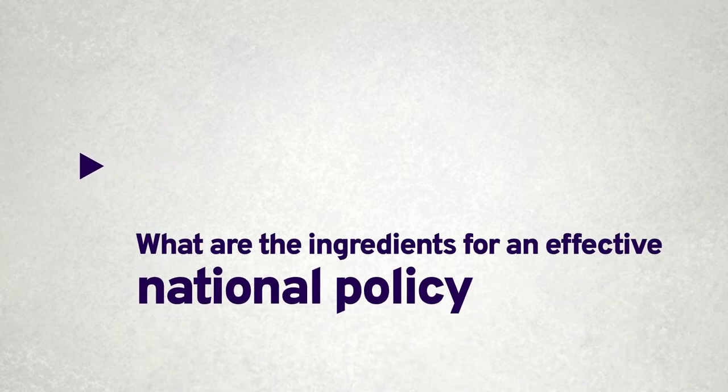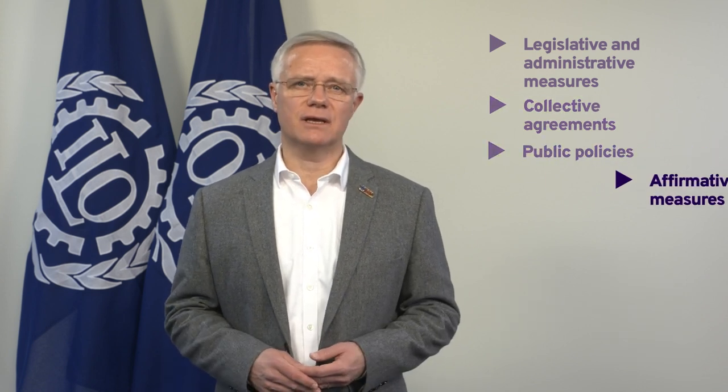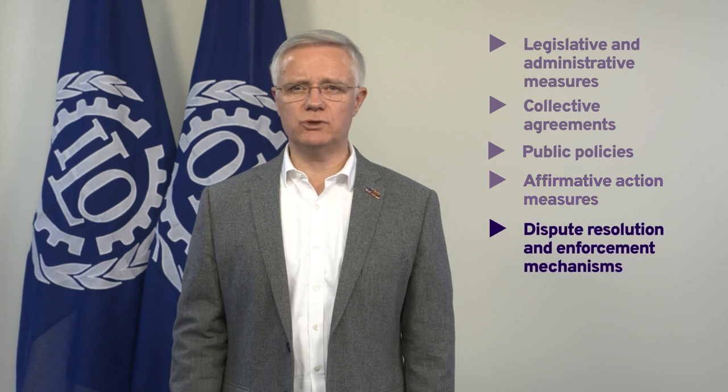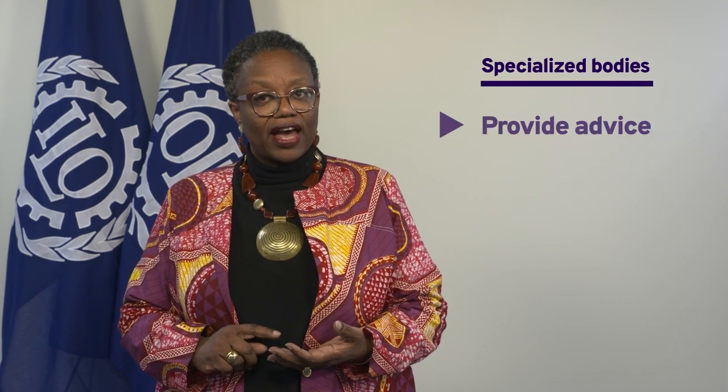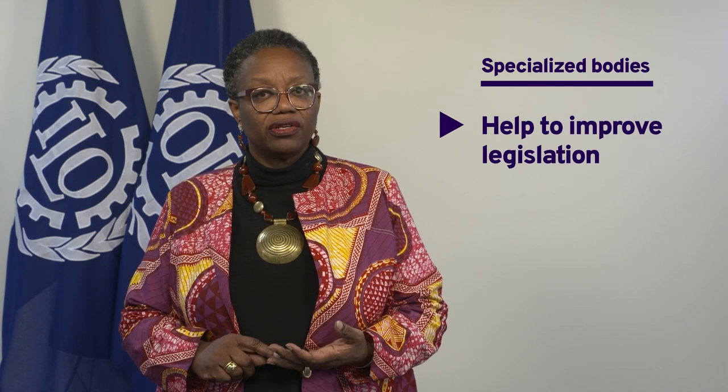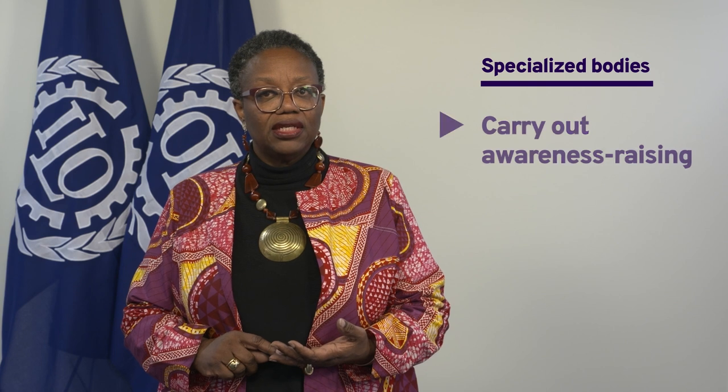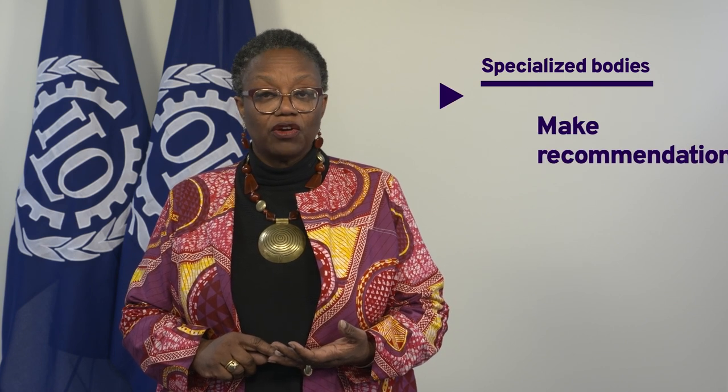What are the ingredients for an effective national policy? An effective national equality policy must combine legislative and administrative measures, collective agreements, public policies, affirmative action measures, dispute resolution and enforcement mechanisms, practical programs and awareness raising, and also specialized bodies. National equality bodies, which are more and more common in many countries, have an important role to play too. They may provide advice, handle complaints, help to improve legislation, carry out awareness raising activities, publish independent reports, and make recommendations.